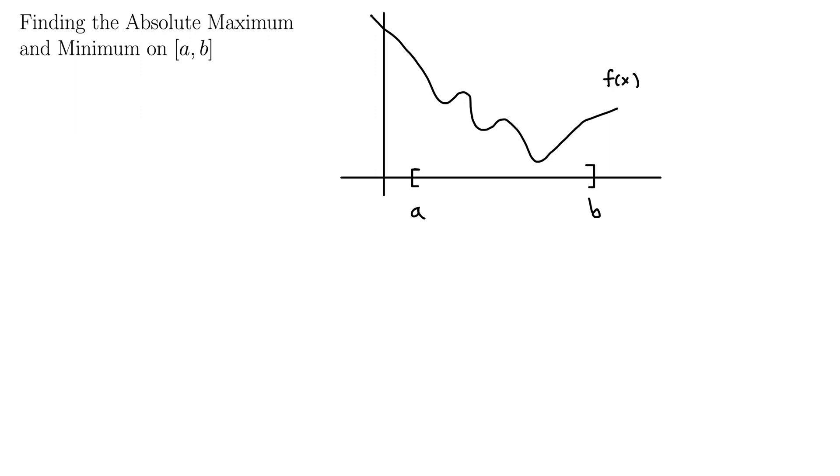Our goal is to find the absolute maximum and minimum on a closed interval [a,b]. Here we have an example drawn of a function with a lot of nice little bumps in it. And those bumps give us local maximums and minimums. So let's identify all those just on this function given.